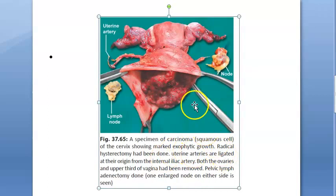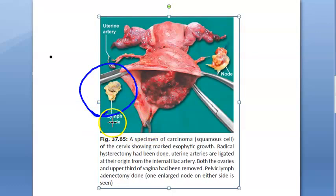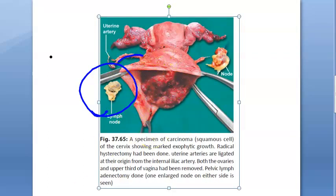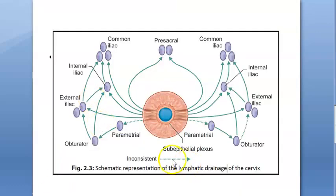The specimen is showing marked exophytic growth. Here you can see the lymph nodes shown beside it, and they are showing the uterine artery here. There is some exophytic growth, and a radical hysterectomy has been done in this case.